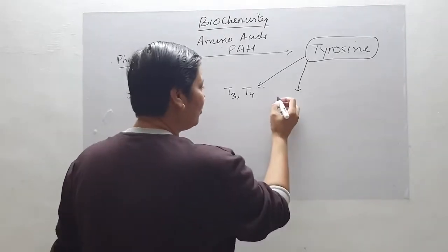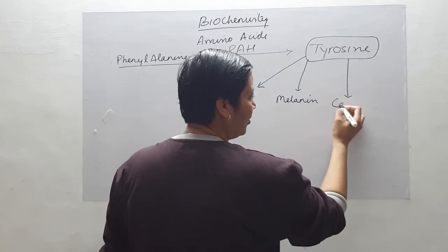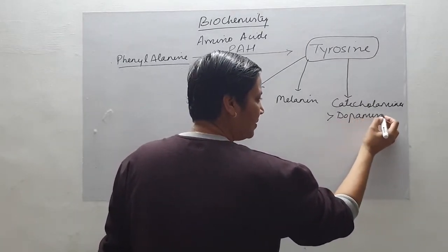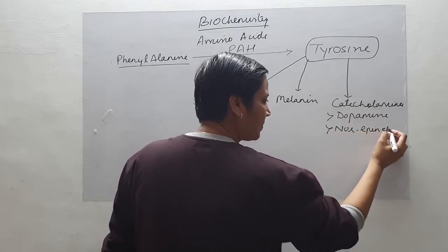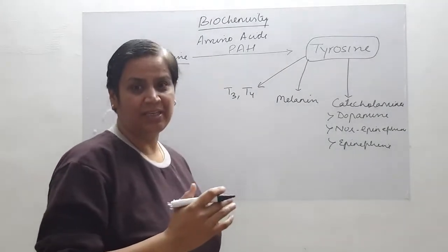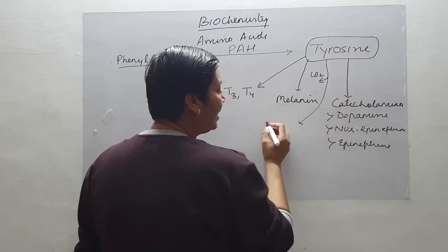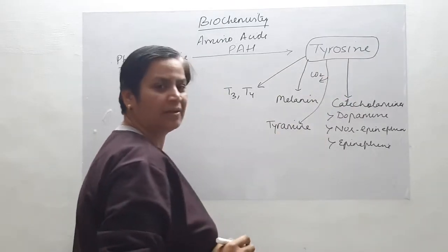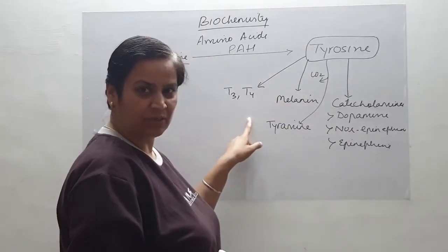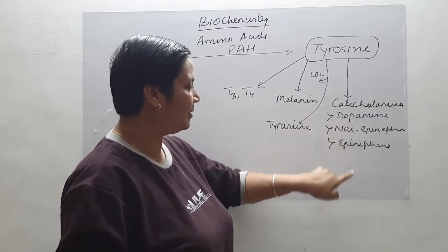Tyrosine is required for the synthesis of T3 and T4 — triiodothyronine and tetraiodothyronine. Tyrosine is required for the synthesis of melanin. Tyrosine is required for the synthesis of catecholamines in our body — the three catecholamines being dopamine, norepinephrine, and epinephrine. Also, tyrosine undergoes decarboxylation to form tyramine. So tyrosine forms four important products: T3, T4, melanin, tyramine, and the catecholamines.